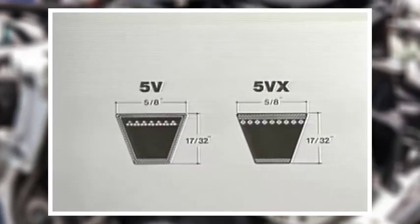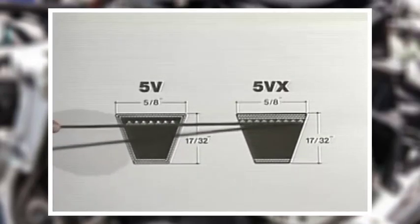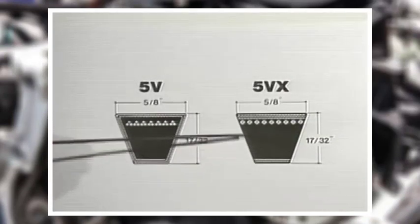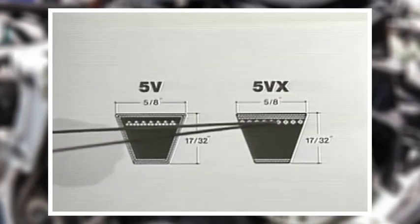Raw edge belts, on the other hand, do not have this protective covering all the way around the belt. Instead, they often have a greater load capacity and bend more easily around small sheaves.